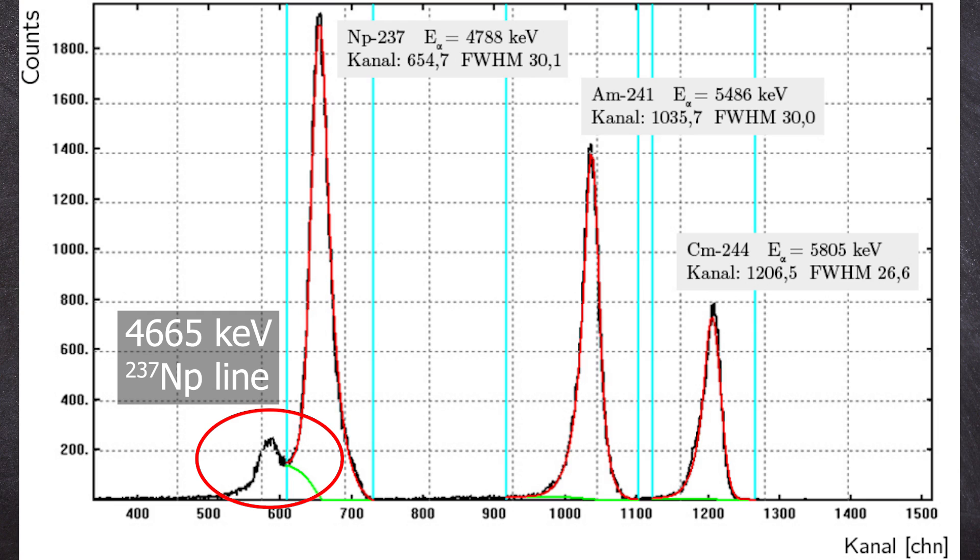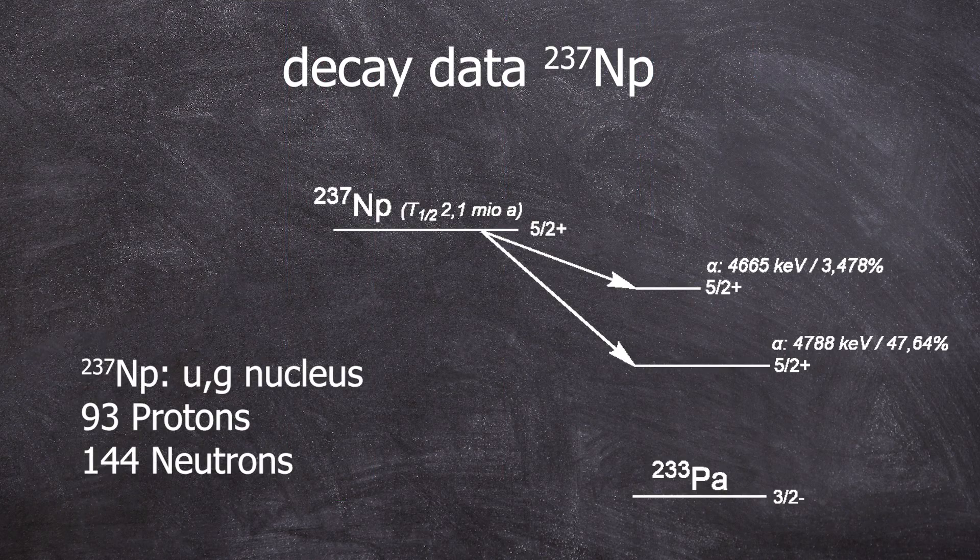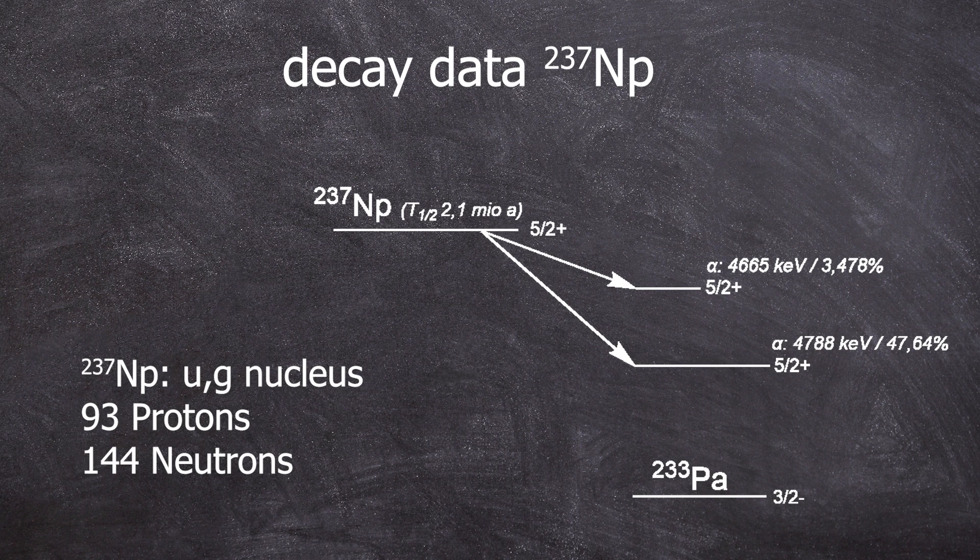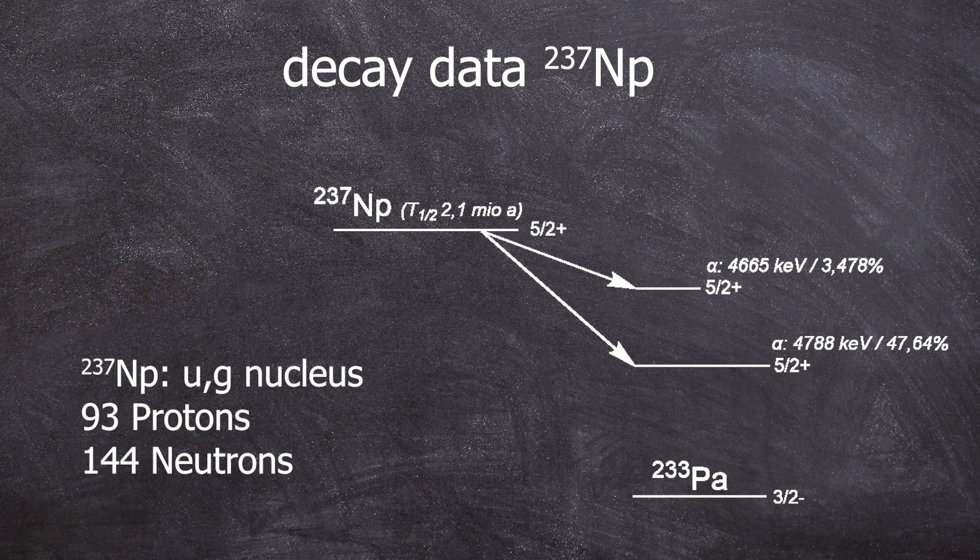That's the 4665 kiloelectron volt alpha energy with a probability of around 3%. I didn't capture this spectrum myself. I dug it out of a very old protocol that we have lying around. There are many more alpha energies associated with the decay of Neptunium-237. Here, I've condensed the decay scheme to show only the two alpha peaks that I showed previously in the spectrum.